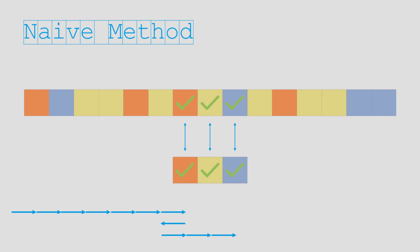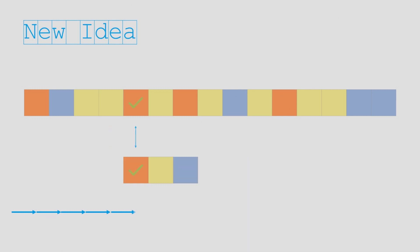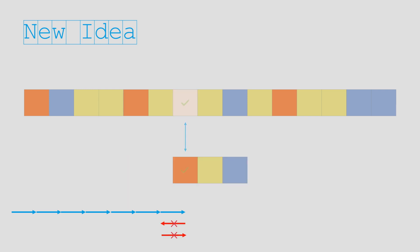But wait, haven't we wasted a lot of time moving back and forth on the tape? What if we could save some time by letting the computer know that it doesn't have to move back on the tape, because the pattern is not likely to start before the current color? As the pattern is orange, yellow, blue, whenever a mismatch happens on blue, we could hold at the current position on the tape instead of moving backwards and start a new comparison, because the previous yellow can never be the start of a match.